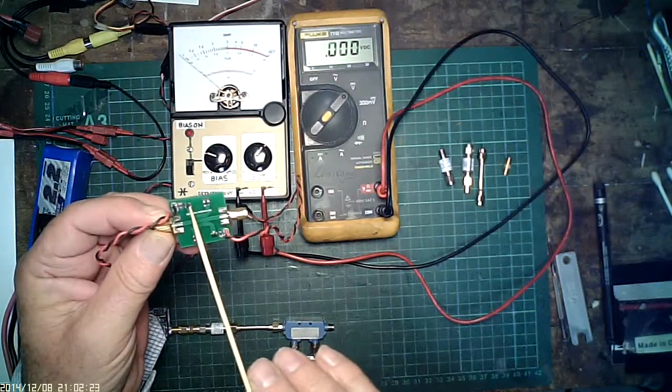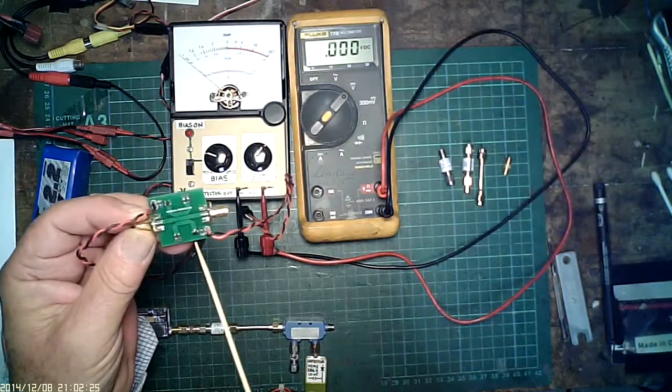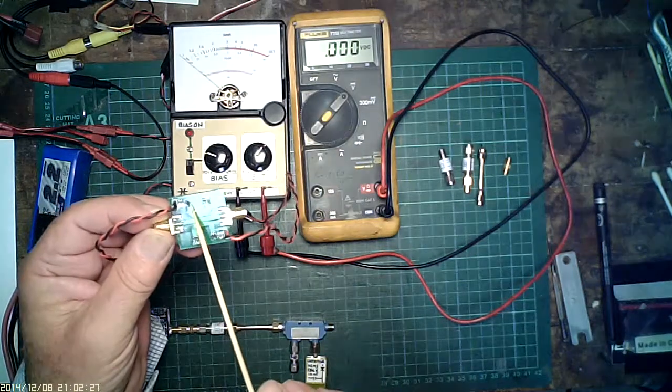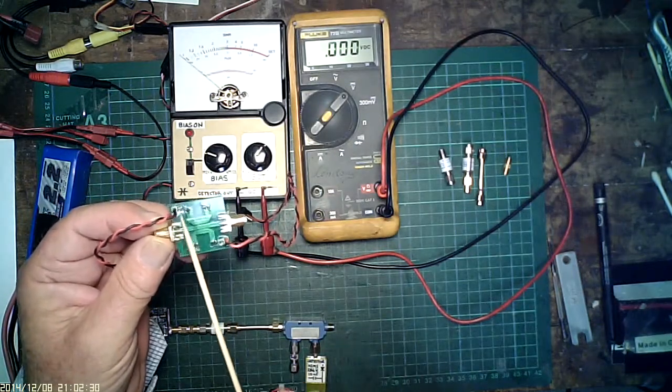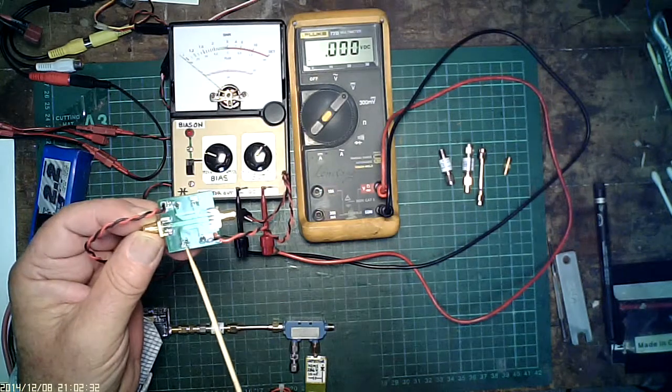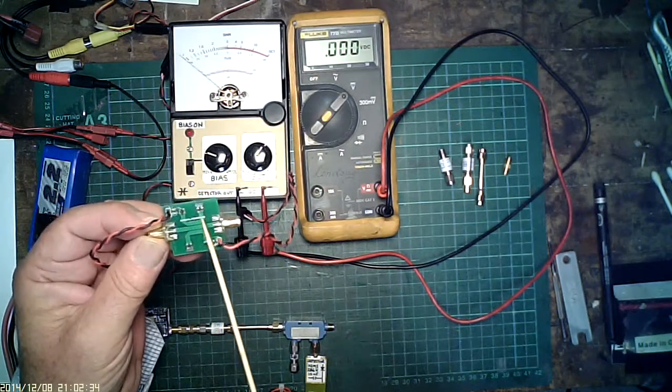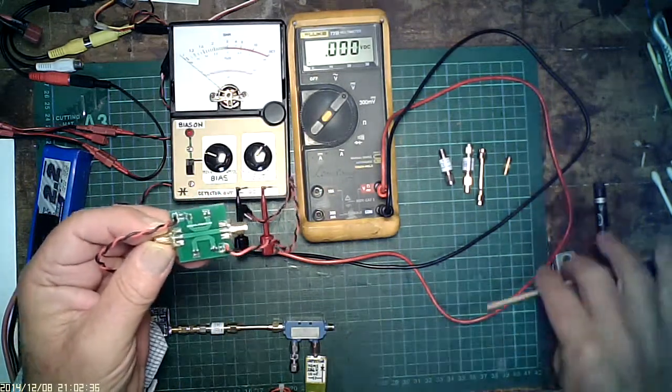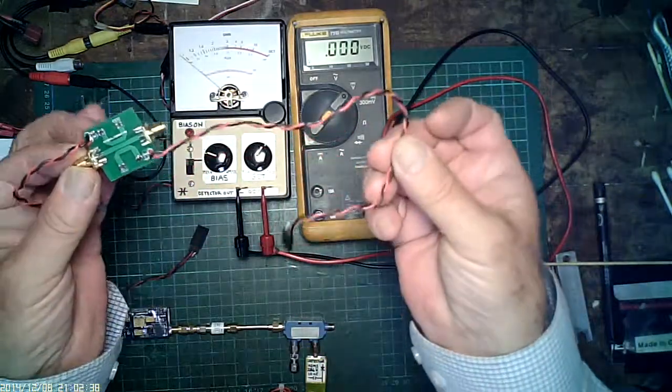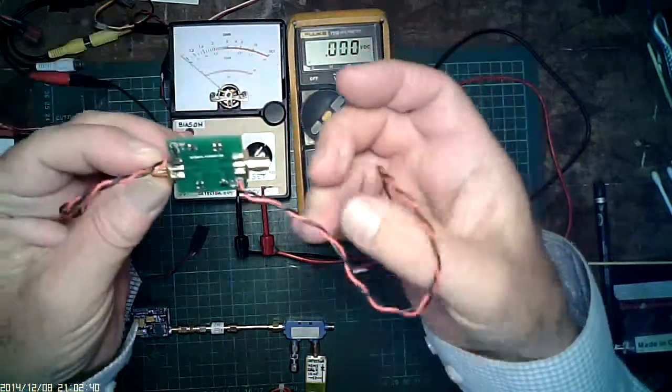This one actually, that's an HSMS 286K, filter cap 10 nanofarads both sides, and the two by 100 ohm resistors terminating a couple of lines. The output of the diode is on there, on these survey leads.